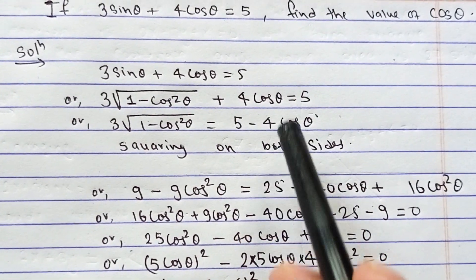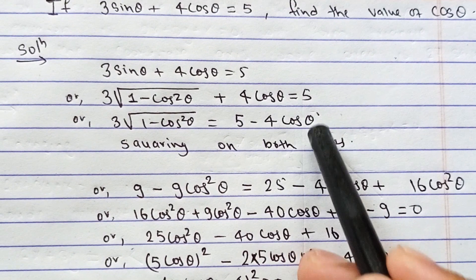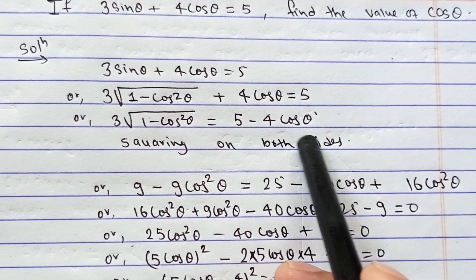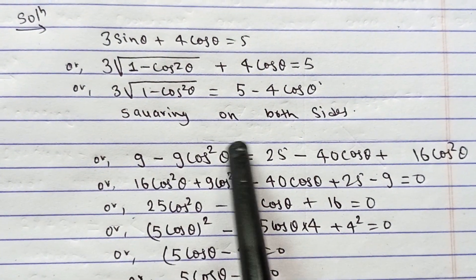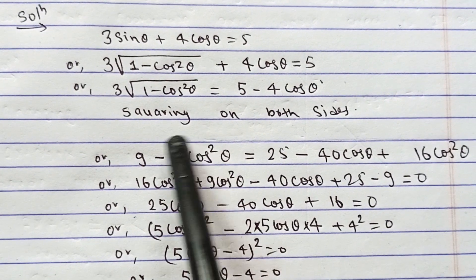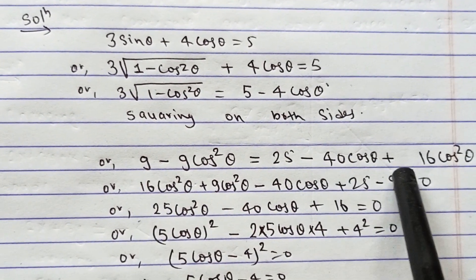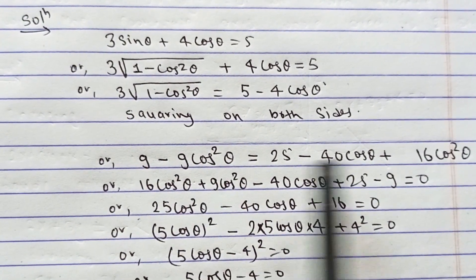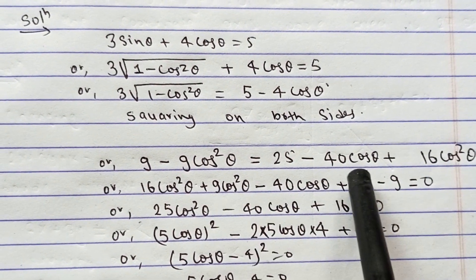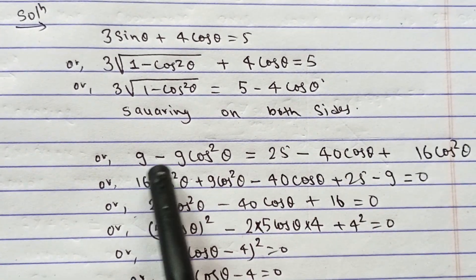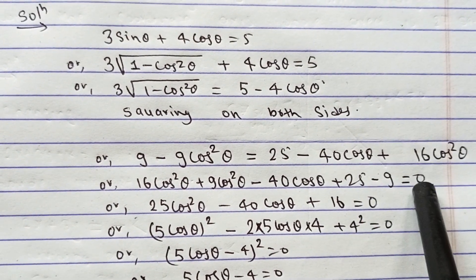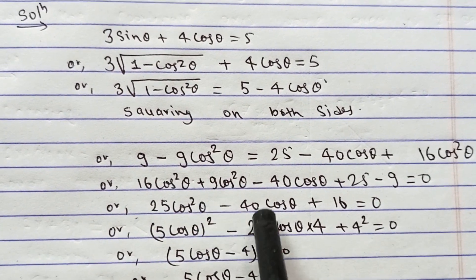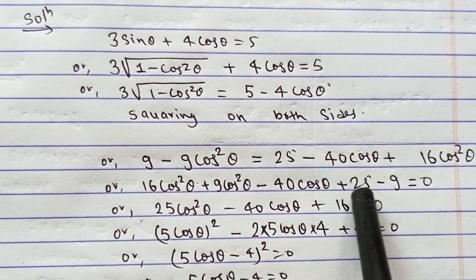The (a - b)² formula is applied here: a² - 2ab + b². All terms are transposed to one side. We get 16 cos²θ + 9 cos²θ - 40 cos θ + 25 - 9, combining like terms.